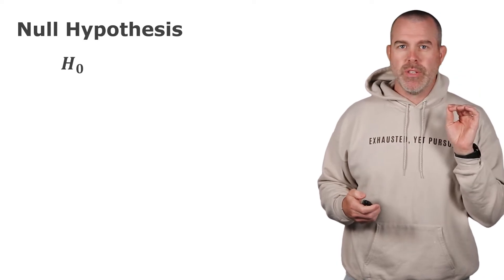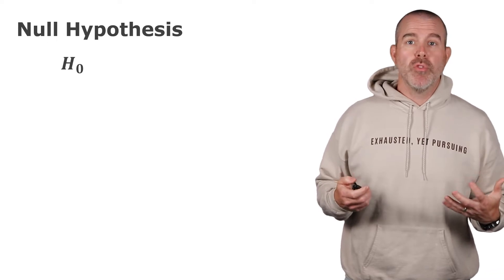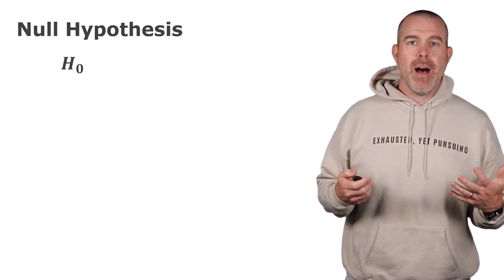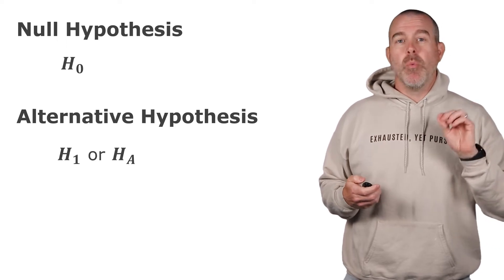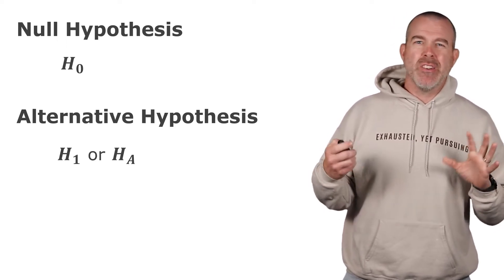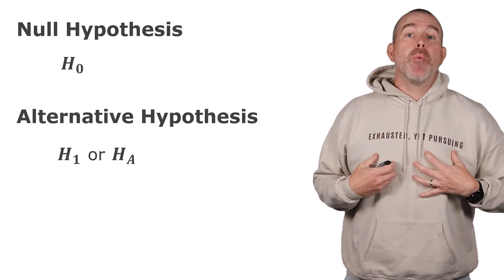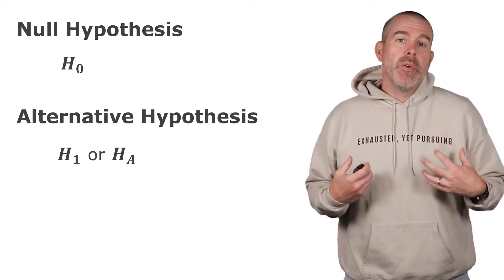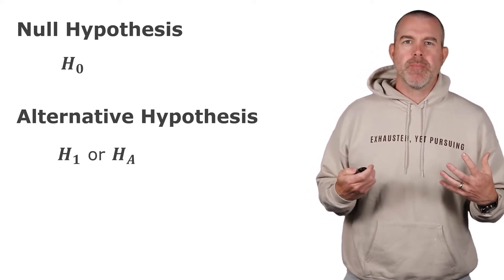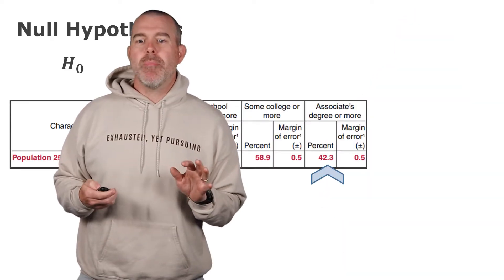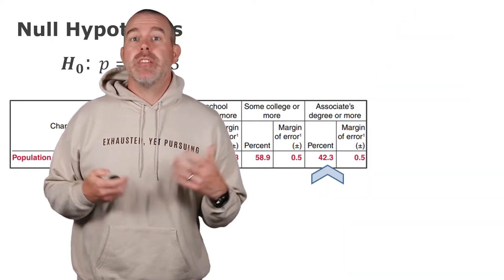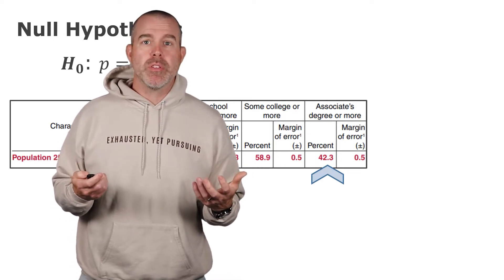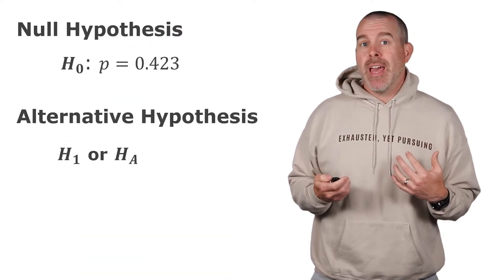We're going to develop a new process called hypothesis testing. The first thing we need is some vocabulary. We're going to introduce something called the null hypothesis, notation H subscript 0. This is what we assume to be true until proven otherwise. The alternative hypothesis, H sub 1 or H sub A depending on your textbook, that's the claim that we're testing, the thing we're wondering if it is true.